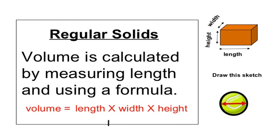For regular solids, volume is calculated by measuring length and using a formula: Volume equals length times width times height.